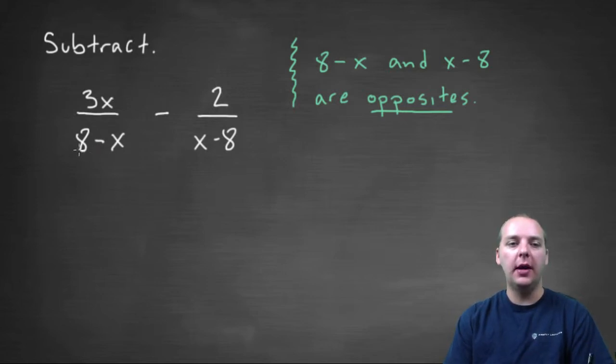we have 3x over 8-x minus 2 divided by x-8. And as you probably know, 8-x and x-8 are opposites of each other.